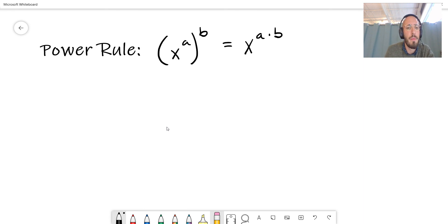So let's say we have x squared all raised to the power of 4. Well, by the power rule,